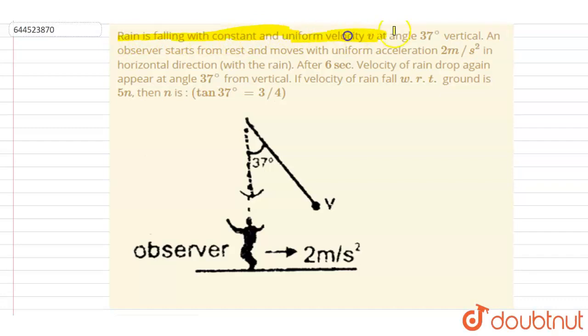Hello everyone. Rain is falling with constant and uniform velocity at 37 degrees with the vertical. Observer starts from rest and moves with constant acceleration in horizontal direction. After six seconds, the velocity of the raindrop again appeared at 37 degrees.